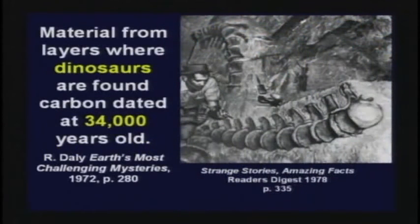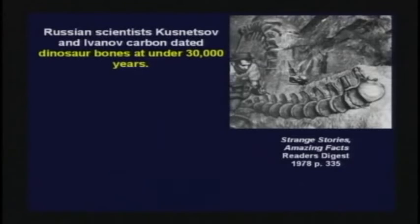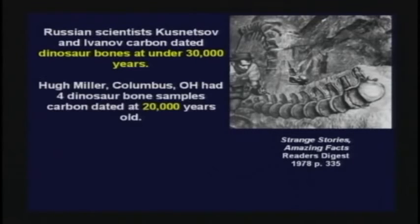Materials from layers where dinosaur bones were found are carbon dated at 34,000 years old. I was in a debate one time and a professor said, how can you use Reader's Digest as a resource? I said, sir, I use Reader's Digest as a resource for the picture of the dinosaur bone — it's not the resource for the fact. Dinosaurs ought to date at 70 million years old. A Russian scientist dated dinosaur bones at less than 30,000 years old. Hugh Miller from Columbus, Ohio took in four dinosaur bone samples and asked to have them carbon dated. They carbon dated them and said they're less than 20,000 years old.